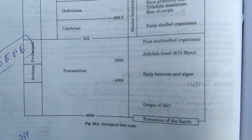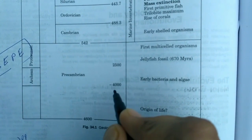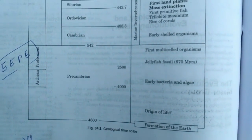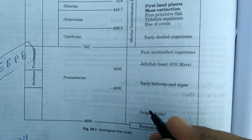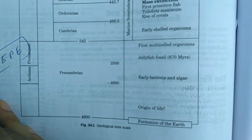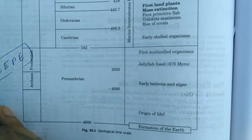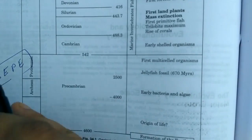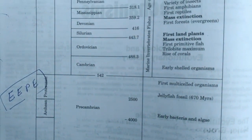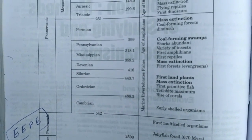Archean and Proterozoic was the time of appearance of life. It was the time of formation of early bacteria and algae, jellyfish, and first multicellular organisms. Later on, 442 million years ago, the second eon is Phanerozoic.